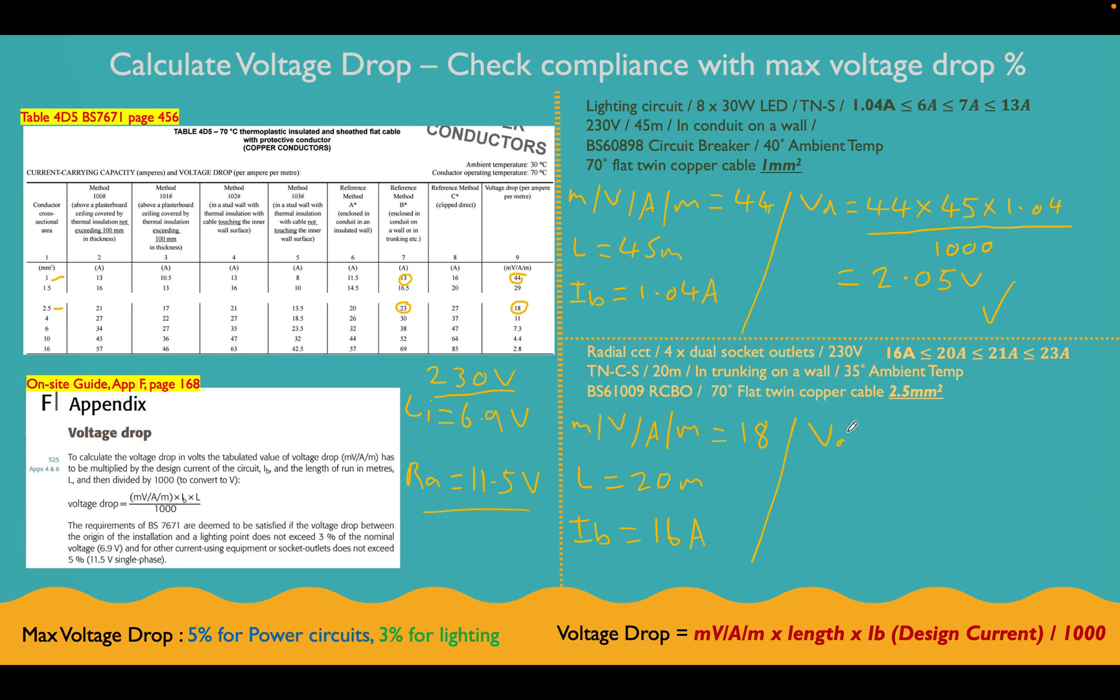So voltage drop is going to be equal to 18 millivolt amps per meter value, multiplied by the length, which is 20 meters, multiplied by the design current, which is 16 amps. Then we're going to divide all that by 1000. And that's going to give us a value of 5.76 volts.